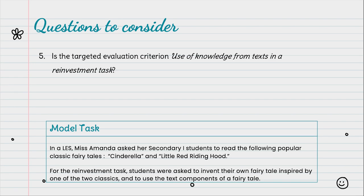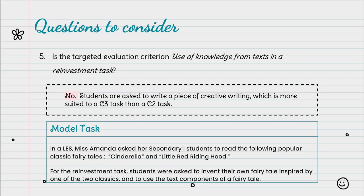What evaluation criterion is targeted here? Is it use of knowledge from text in their reinvestment task? No, it is not. In this case, students are asked to write a piece of creative writing. This lends itself more to a C3 task than a C2 task. In addition, the fairy tale that students choose may not be essential to carrying out this reinvestment task. Students may rely heavily on their prior knowledge — for example, classic fairy tales are well-known in a student's mother tongue, and they may also be explored in their French class.